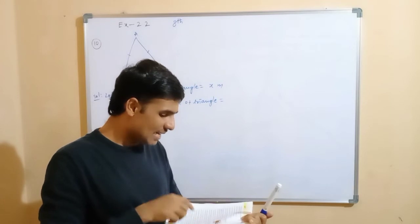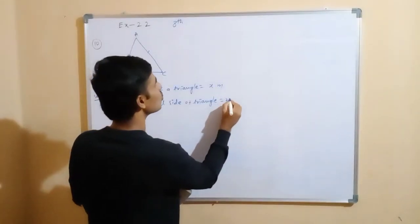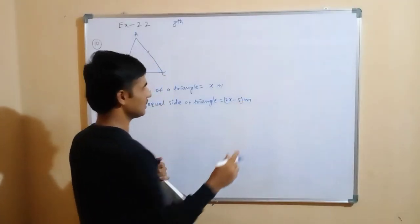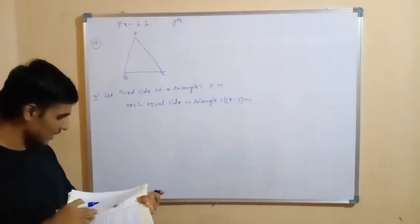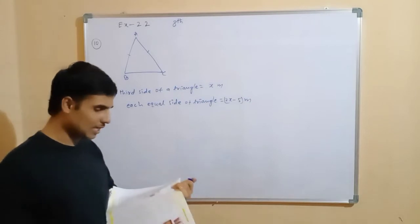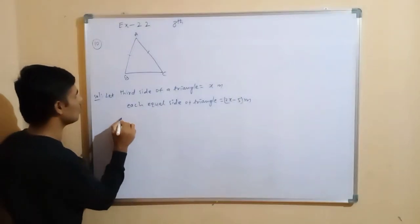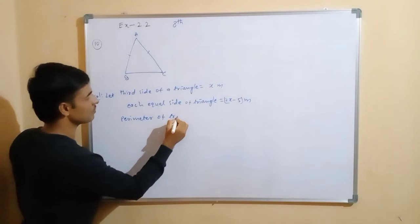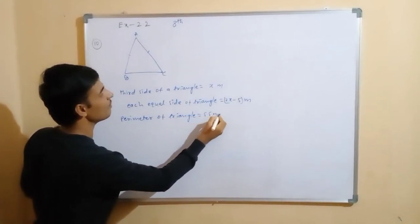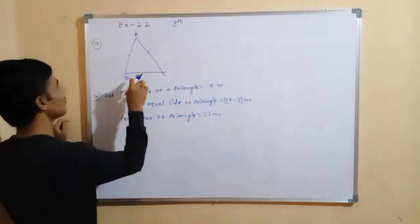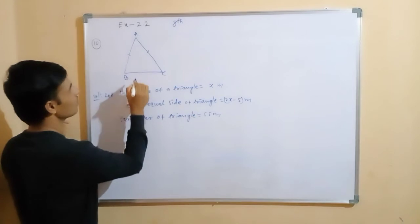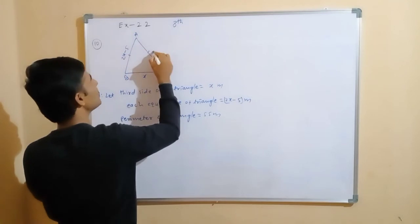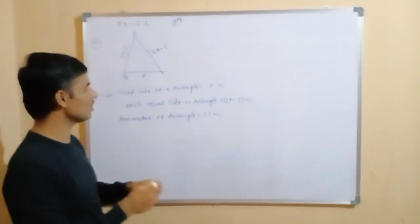5 meters less than twice the third side — twice means we take 2x, and less than means we subtract 5, so each equal side equals 2x minus 5 meters. The perimeter of the triangle equals 55 meters. The third side is x, and each equal side is 2x minus 5, so there are two equal sides each of 2x minus 5.